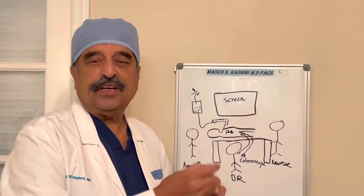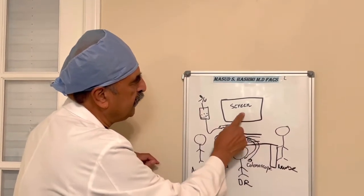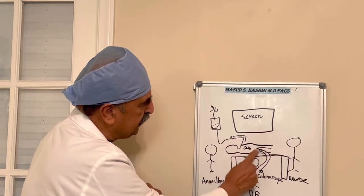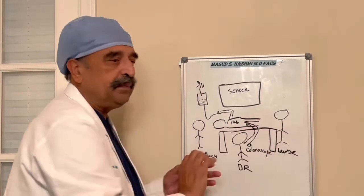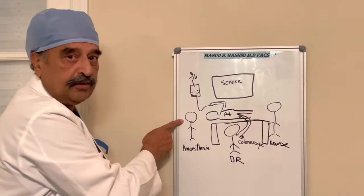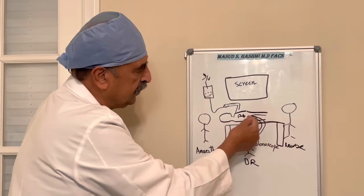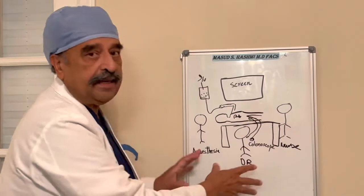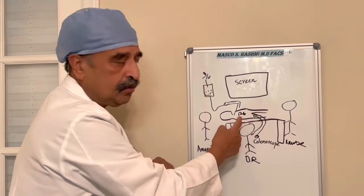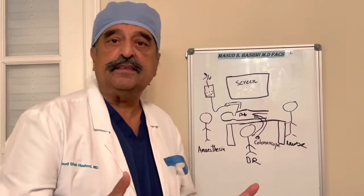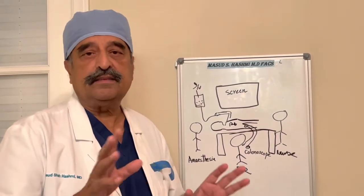Here is a picture of the endoscopy suite. Here's the screen where the image comes up, here's the IV. The patient is lying in the left lateral position with an IV in the hand. The nurse will be writing things down and watching the patient. The anesthesiologist gives medication to sedate you, and here's the endoscopist inserting the colonoscope from the anus to check your colon. The patient lays down in left lateral position, anesthesia is given, and the surgeon starts the scope. The procedure takes roughly half an hour or less. After that, the patient goes to recovery, and in about one hour the whole thing is done and the patient goes home.